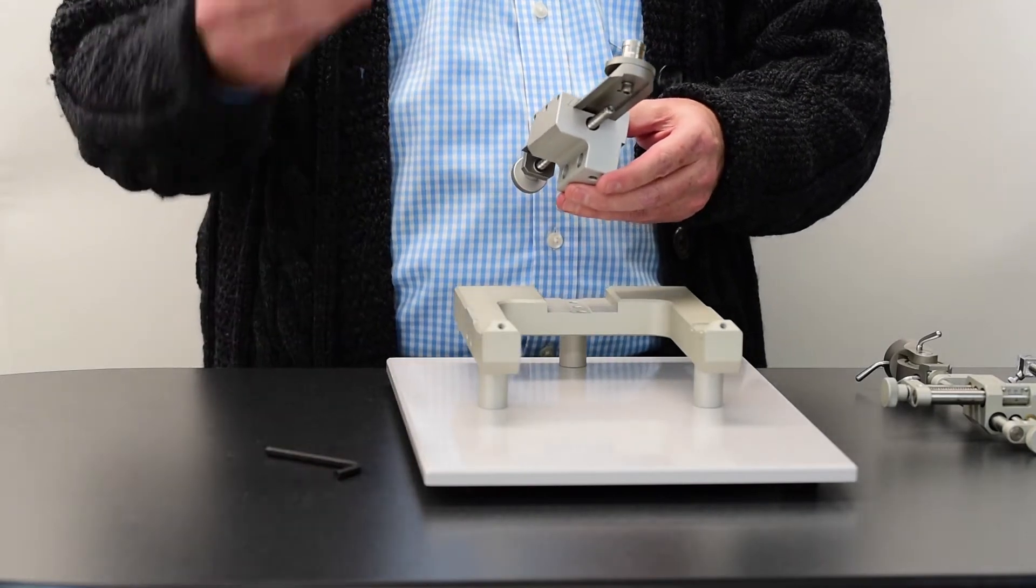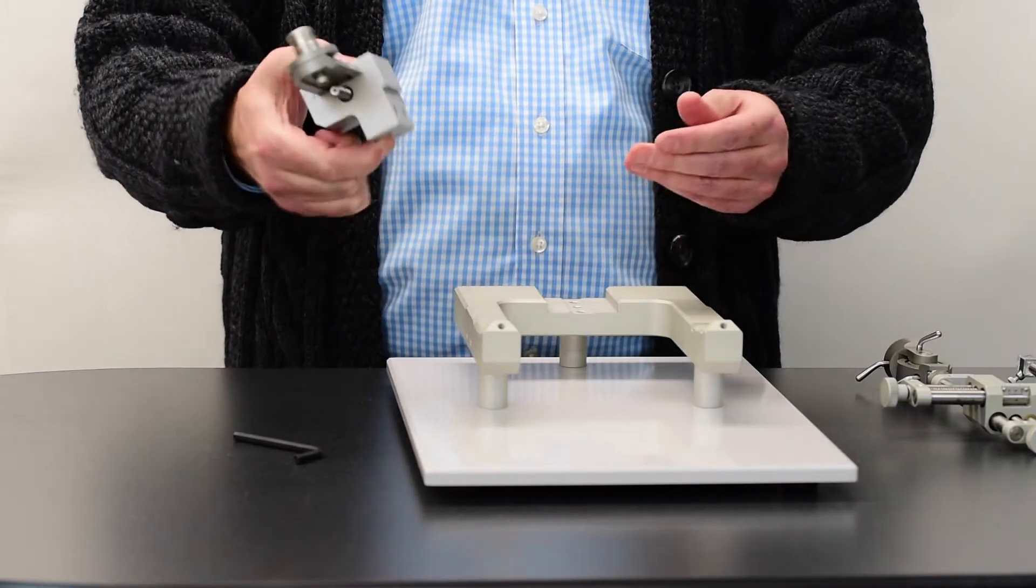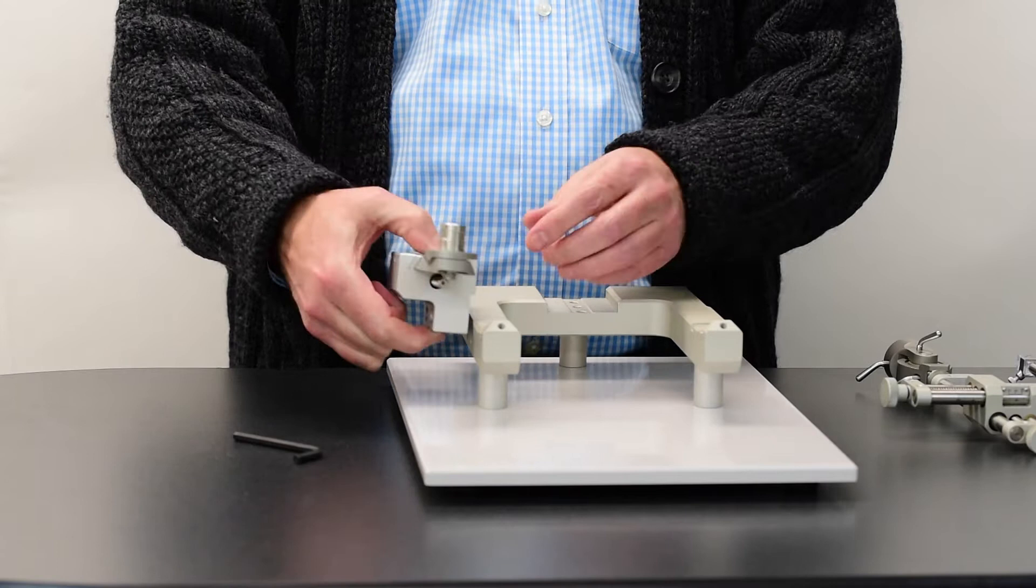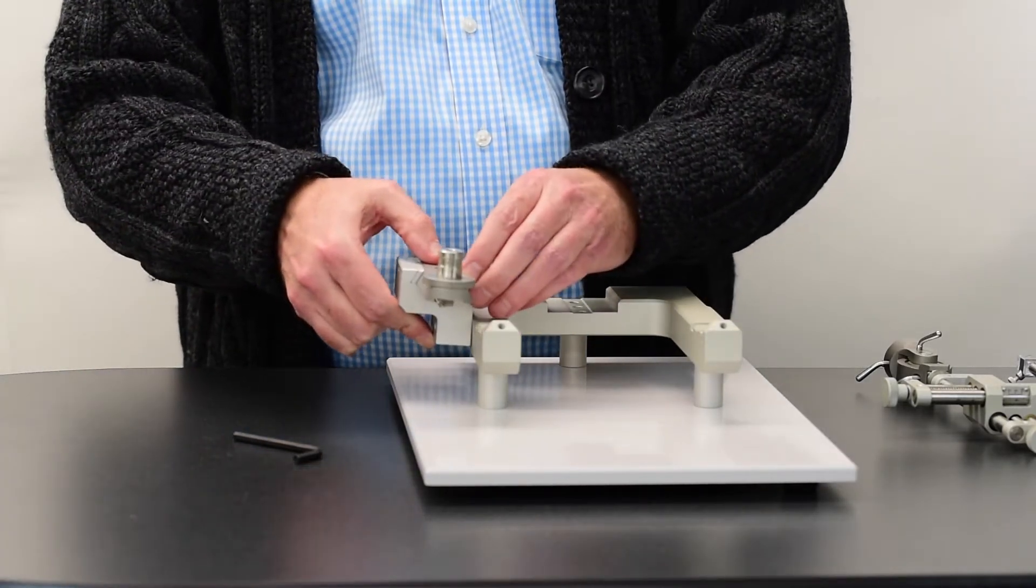It comes with two screws and a hex key for the installation process. Simply put the lip of the AP drive onto the side of the U-frame. There's two holes down on the side here.